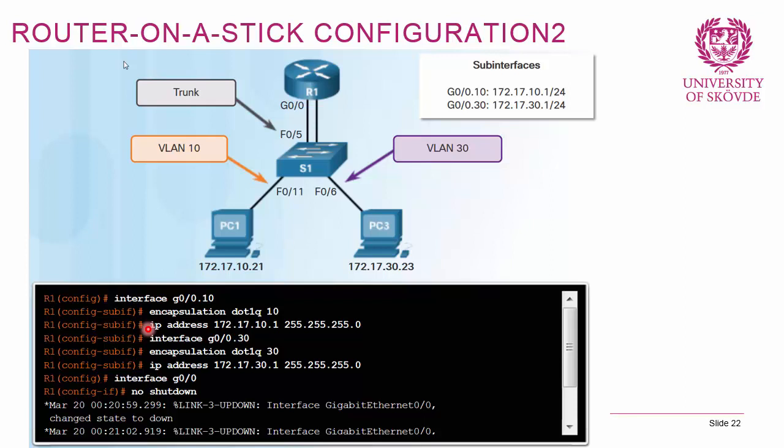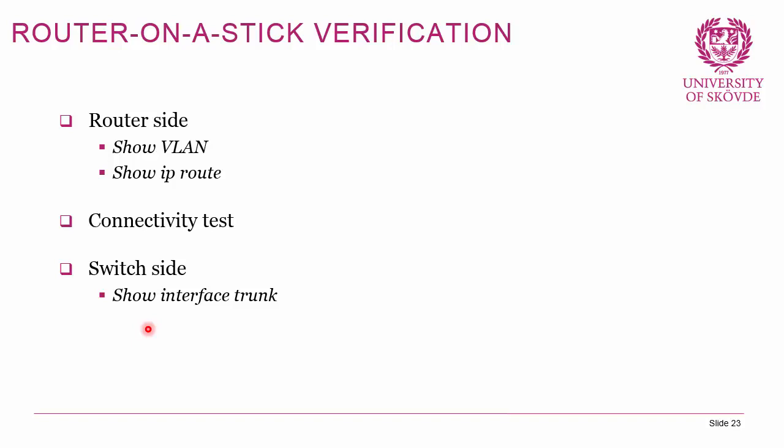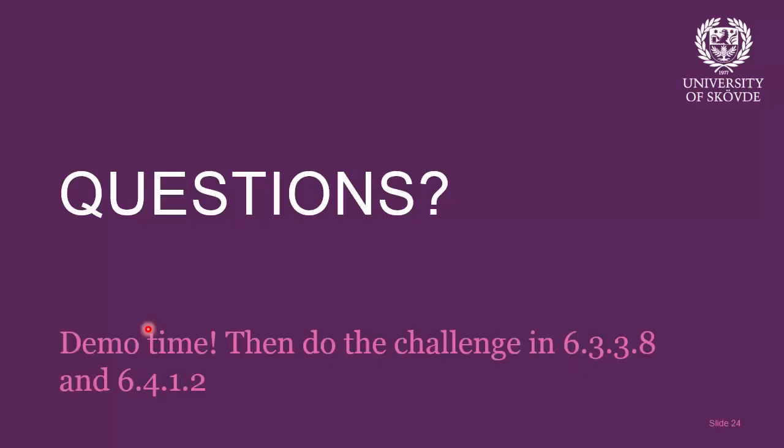To verify router-on-a-stick: run 'show ip route' to see directly connected routes to the sub-interfaces/VLANs, run 'show vlan' on the router, do a connectivity test to confirm devices from different VLANs can ping each other, and on the switch side run 'show interfaces trunk'. I encourage you to do the challenges in 6.3.3.8 and 6.4.1.2. This is vital switching material needed for the rest of this course and for CCNA 3 and 4.